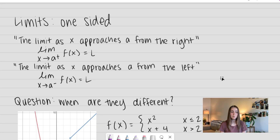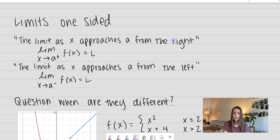We have the definition written with words and also the notation. The limit doesn't look very different. The difference from our previous example is that we're approaching a number from the right or from the left. How we change that in the notation is we add a little plus sign or a little minus sign.